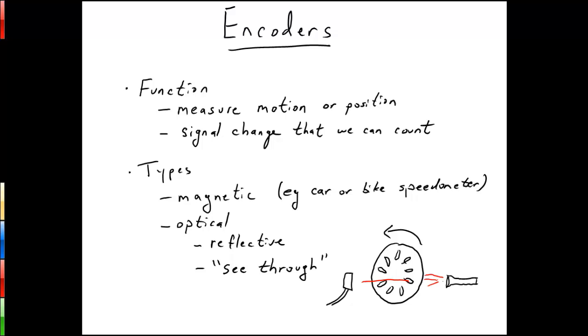In this video we're going to talk about encoders. The function of an encoder is to measure the motion or position of an object, and it can measure it either in a relative sense or in an absolute sense.